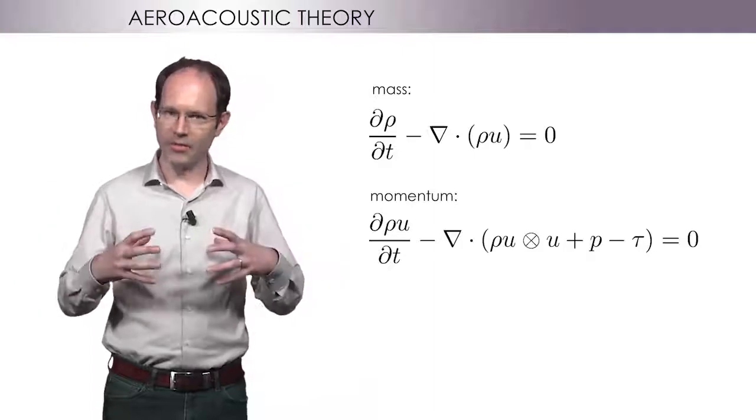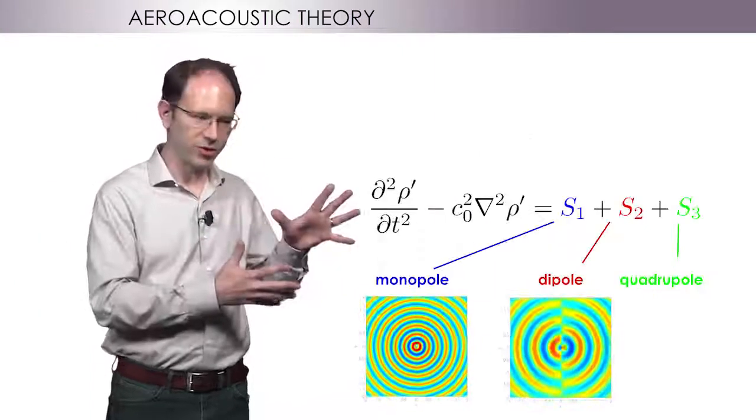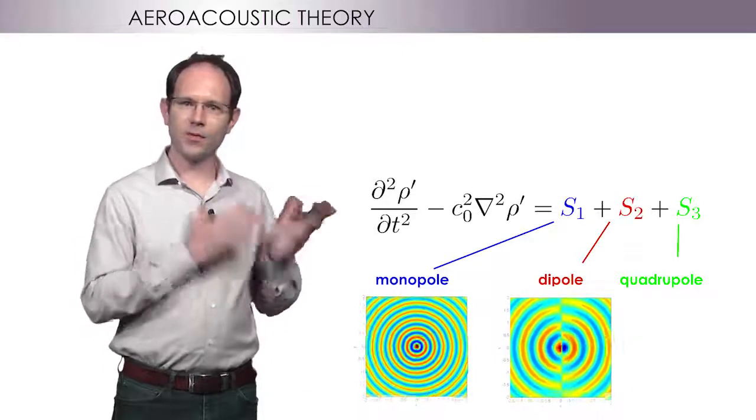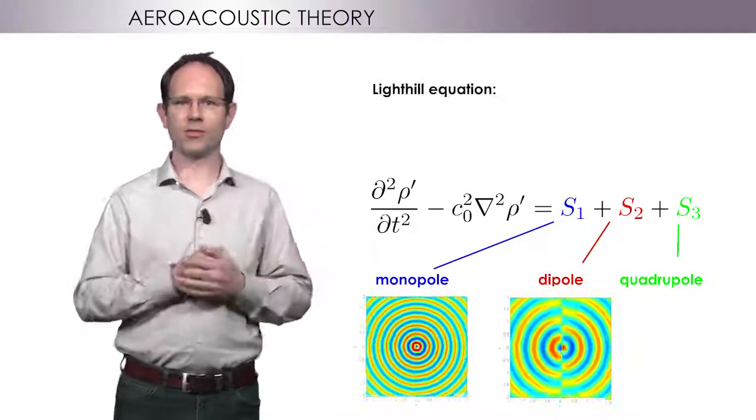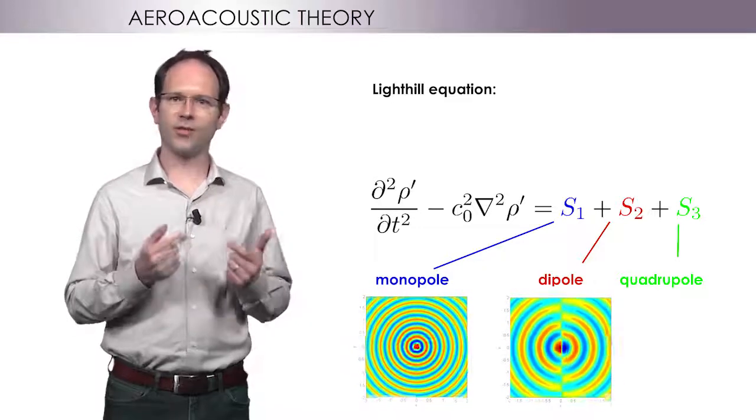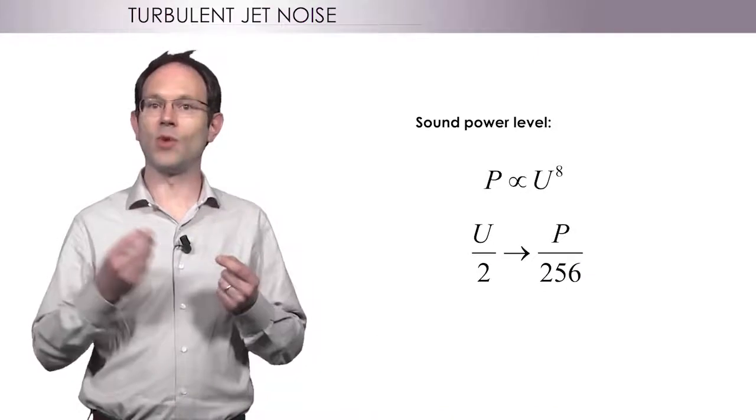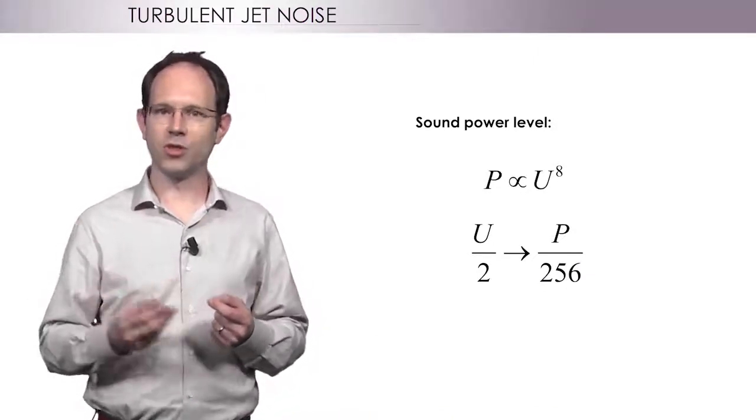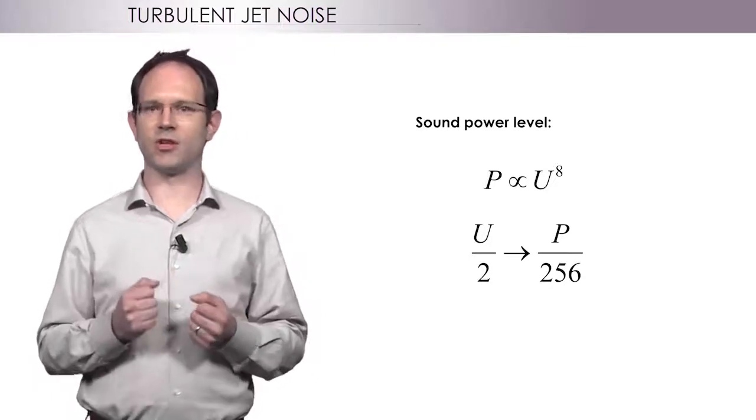And we can combine these together into a wave equation, like the ones that you have seen in the course. This is called the Lytill equation. James Lytill deduced from it only by looking at the form of the source terms that the radiated acoustic power from a turbulent jet is proportional to the eighth power of the jet velocity.